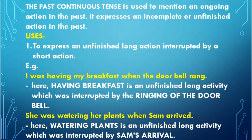Look at another example: 'She was watering her plants when Sam arrived.' Here also there are two activities. Watering plants is an unfinished long activity which was interrupted by Sam's arrival. Sam arrived is in simple past tense, whereas the long continuous action — she was watering her plants — is mentioned in past continuous.